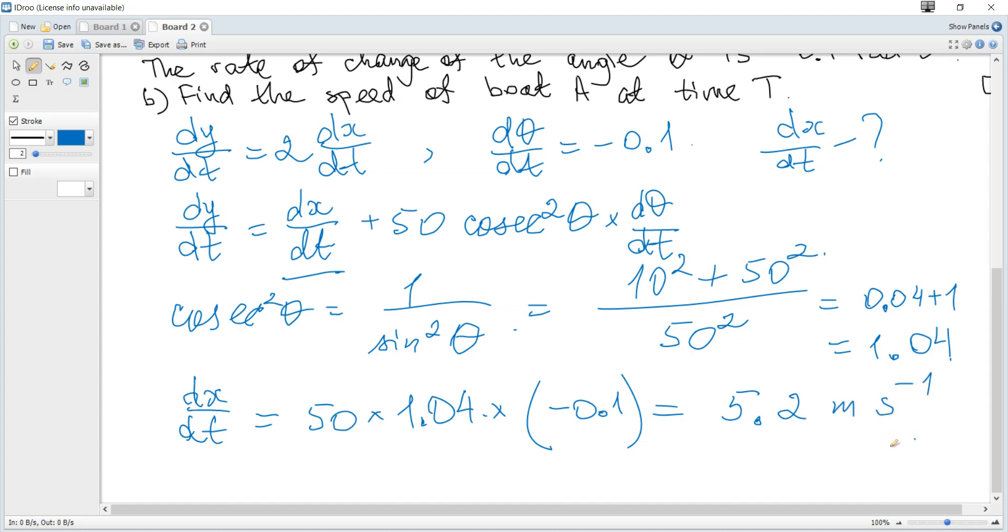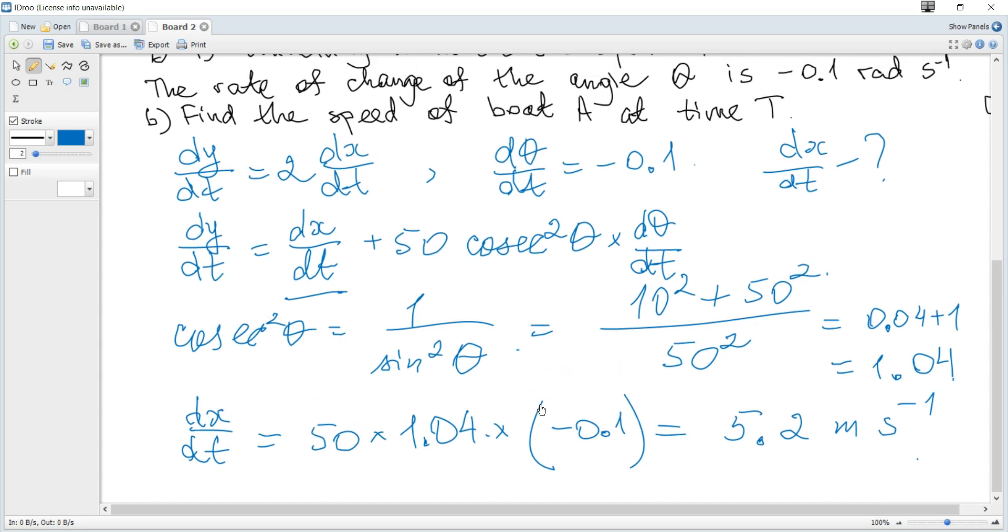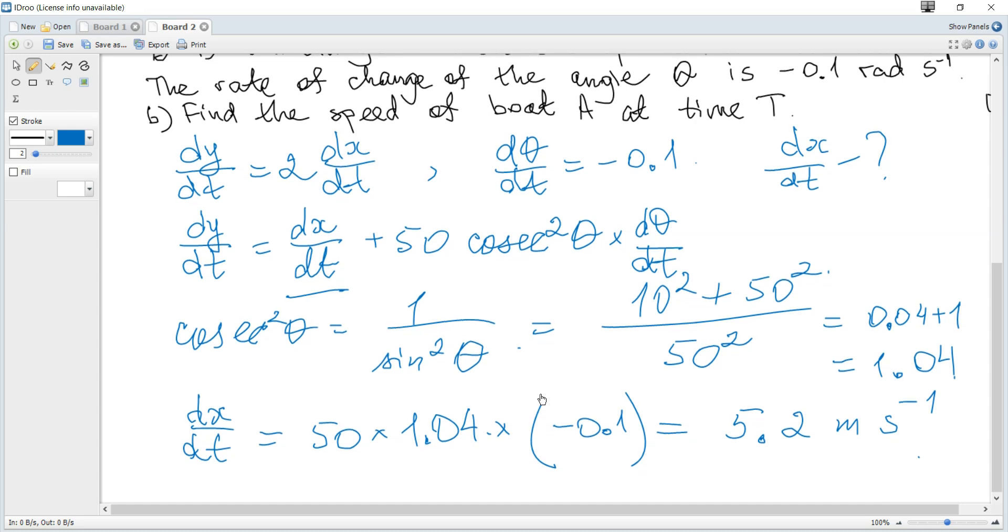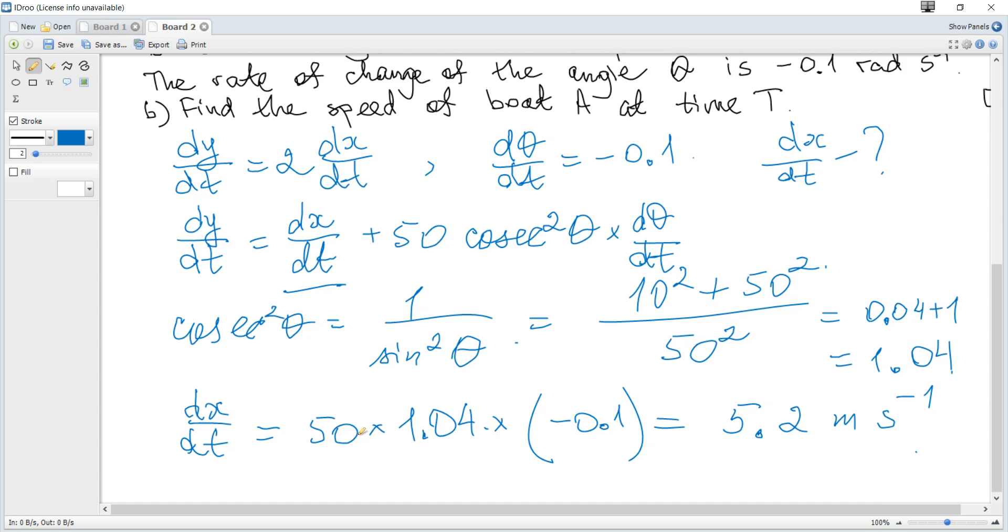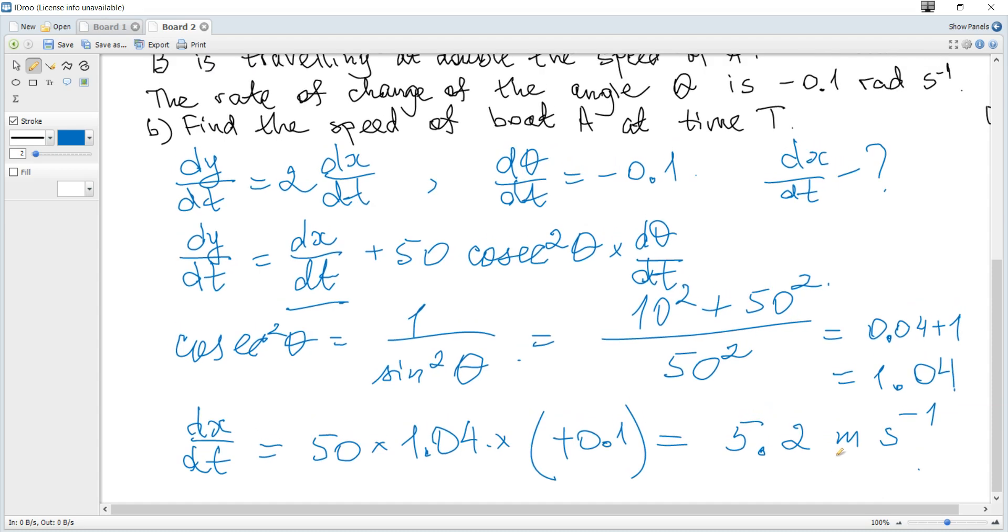And it's the correct answer. We can make absolute value or just consider plus here because we need just magnitude. We need speed not velocity. Minus indicates that the rate of change of x coordinate decreases with time. So we need just magnitude, 5.2 meters per second. And that's all for this question.